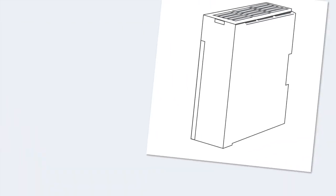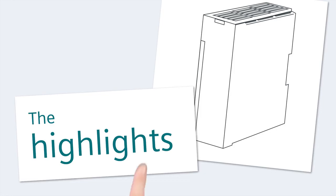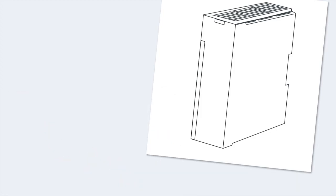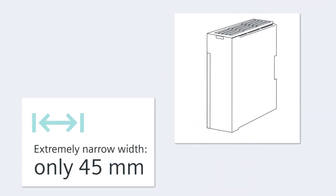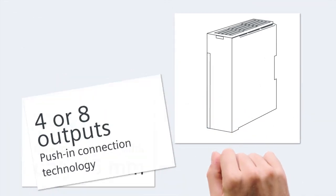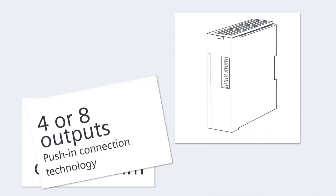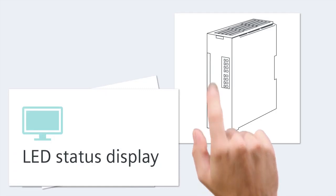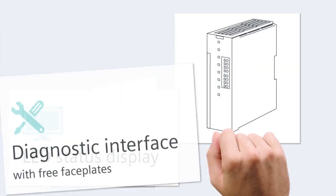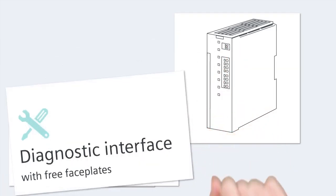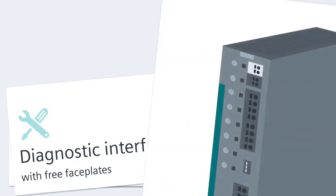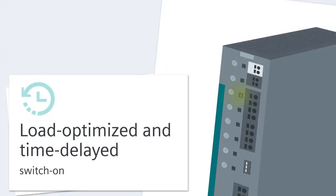Let's start with the highlights of the new CTOP selectivity modules. They have an extremely narrow width of only 45 millimeters, four or eight outputs that can be set between 2 and 10 amperes, push-in connection technology, an LED status display, and a diagnostic interface with free faceplates. They also permit load-optimized and time-delayed switch-on.